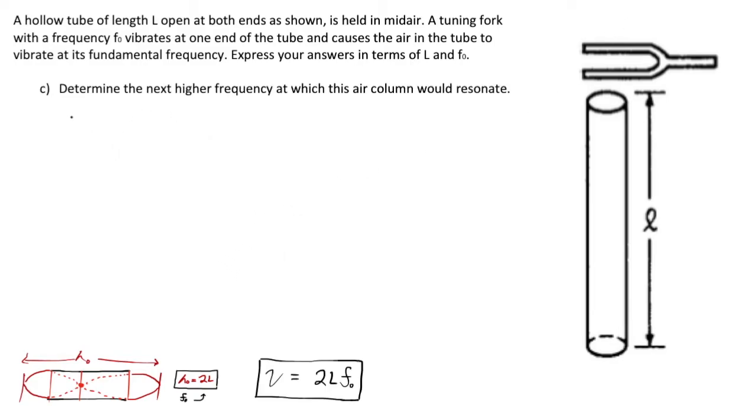But time for the good part, part c. Determine the next higher frequency at which this air column would resonate. We'll need the information we just found, namely the velocity of the air inside the cylinder. But remember that thing I said about the nodes?